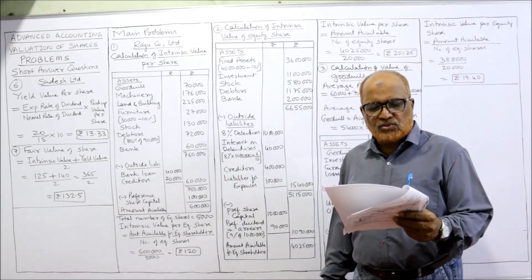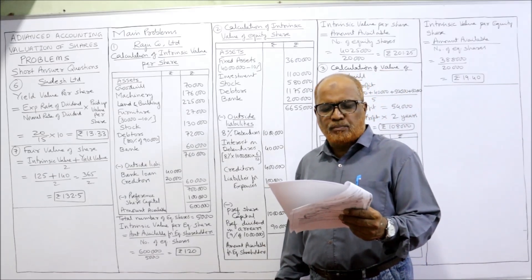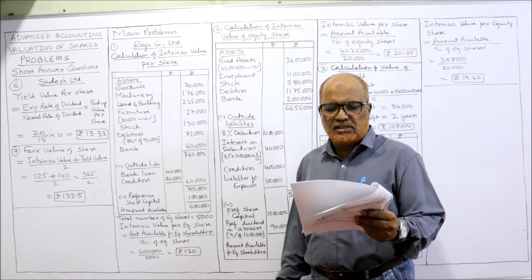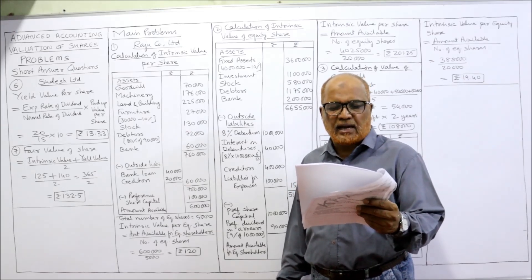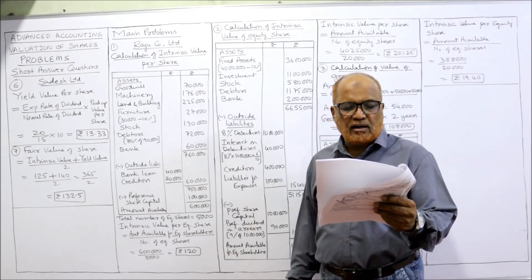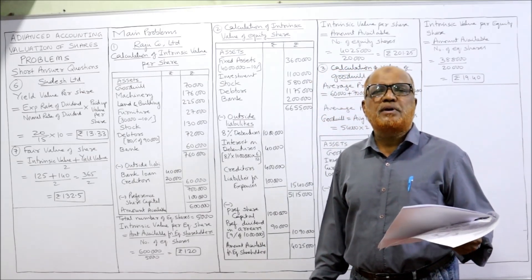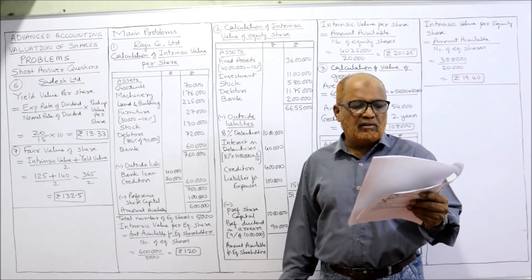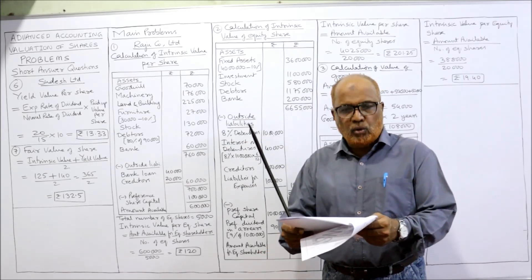Equity and liabilities: Shareholders' fund — share capital ₹6 lakh, reserves and surplus ₹60,000. Long term borrowings — bank loan ₹40,000. Trade payable ₹20,000. Total liabilities ₹7,20,000. Assets side — non-current assets: fixed assets tangible ₹3,80,000; intangible assets goodwill ₹60,000. Other non-current assets — preliminary expenses — should not be taken; it is a fictitious asset, ignore it. Current assets: inventories, trade receivable, cash and cash equivalent. Total of the balance sheet ₹7,20,000.